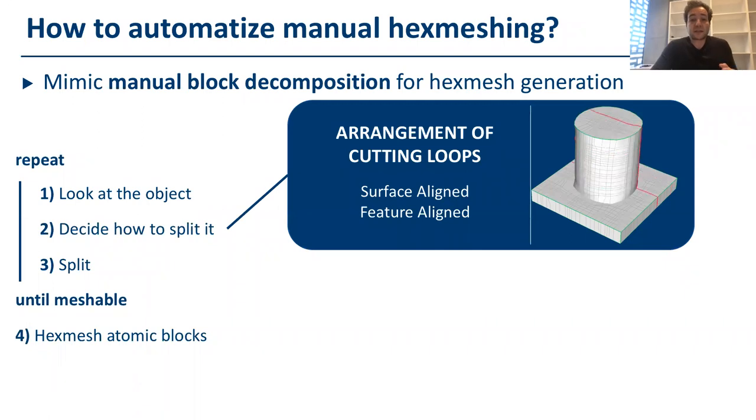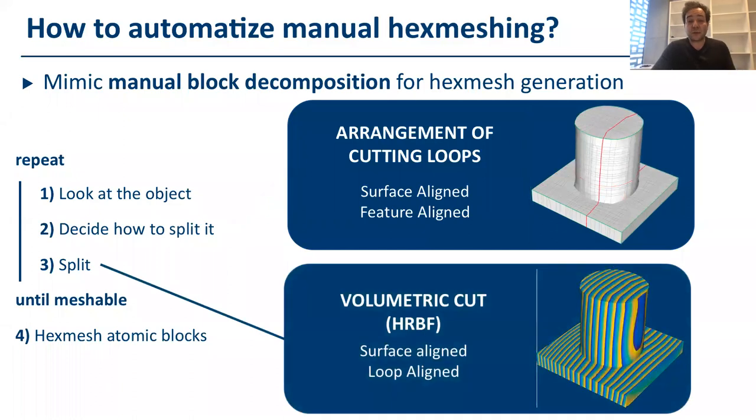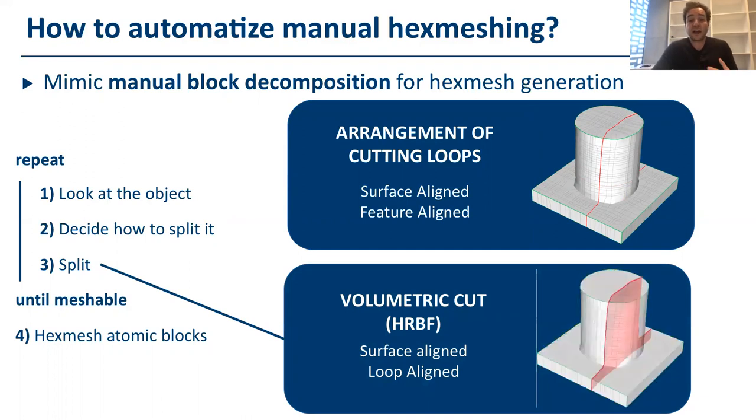So, we want to mimic this algorithm and make it automatic. In order to decide how to split the object, we define a set of feature alignment loops which follow also curvature lines, and then we use these loops to cut the object volumetrically into simpler objects. And we repeat this process again until it's possible to obtain the final hex meshing with a subdivision step.